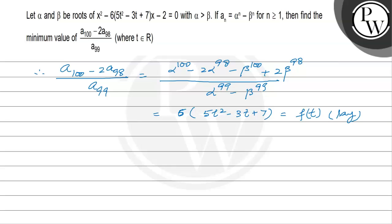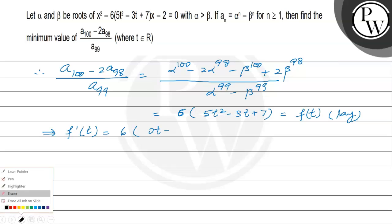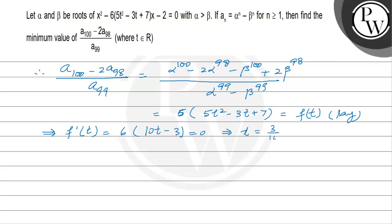The value of the left-hand side depends on f(t) only. So we have to find the critical points at which f'(t) equals 0. f'(t) equals 6 times (10t minus 3) equals 0, which gives t equals 3 over 10.